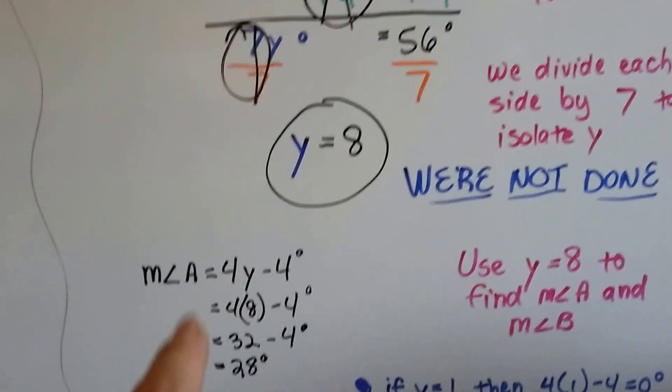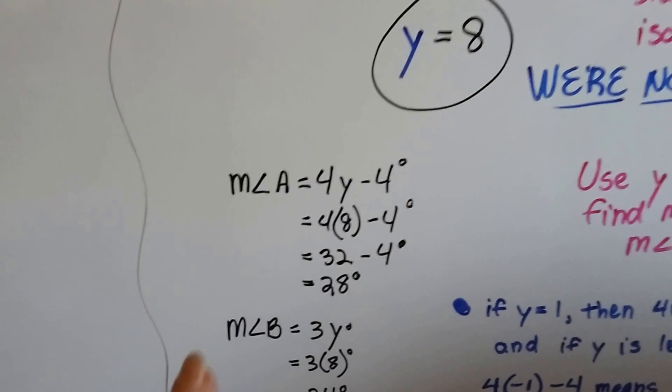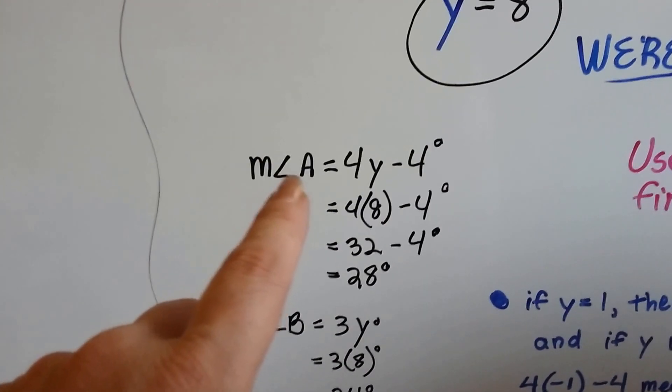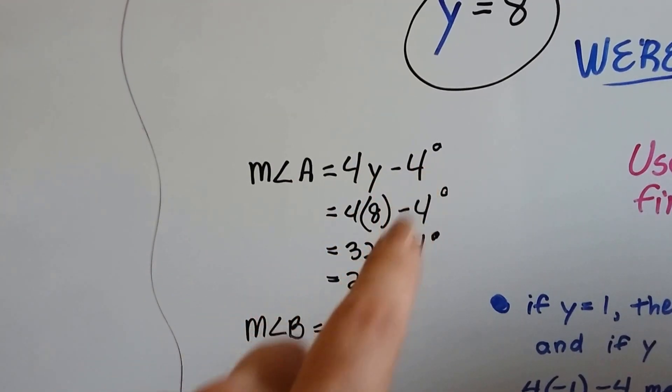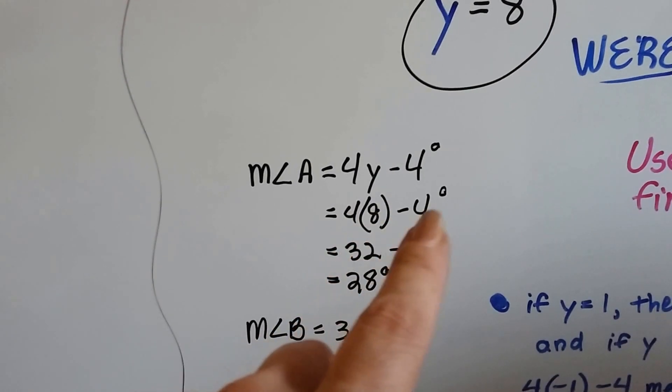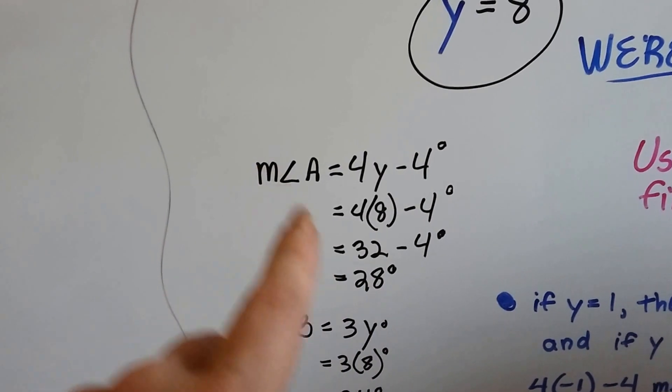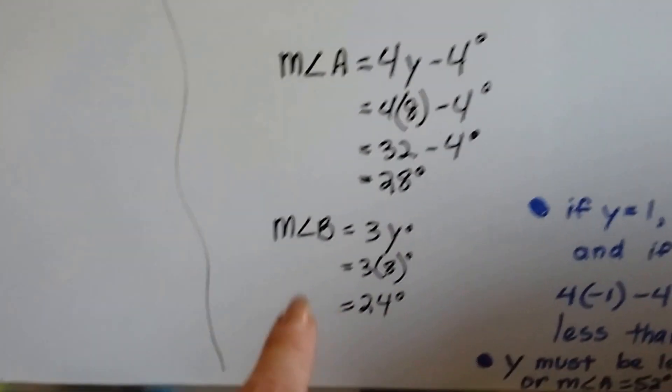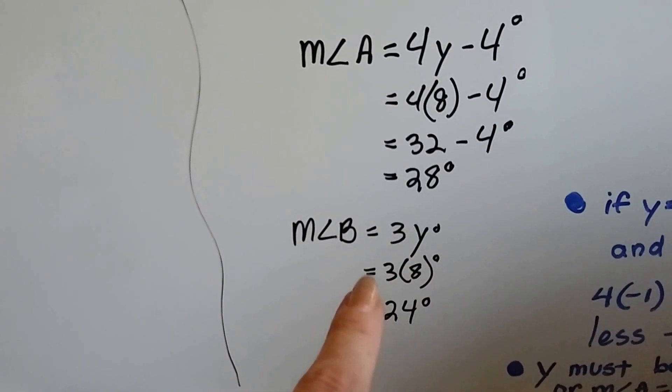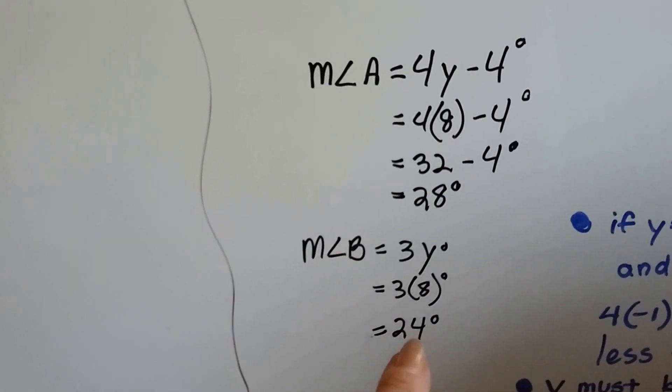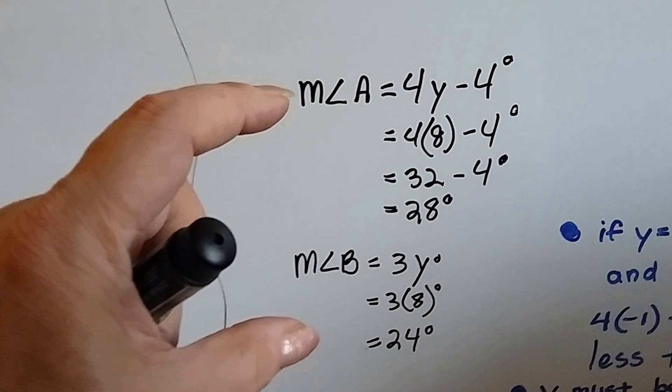We know that y equals 8. We still need to plug it in to what those measures were. The measure of angle A was 4y minus 4. So that's 4 times 8 minus 4. That's 32 minus 4, which is 28. Measure of angle A is 28 degrees. Measure of angle B was 3y, so that's 3 times 8, which is 24 degrees. So now we know the measures of the two angles.